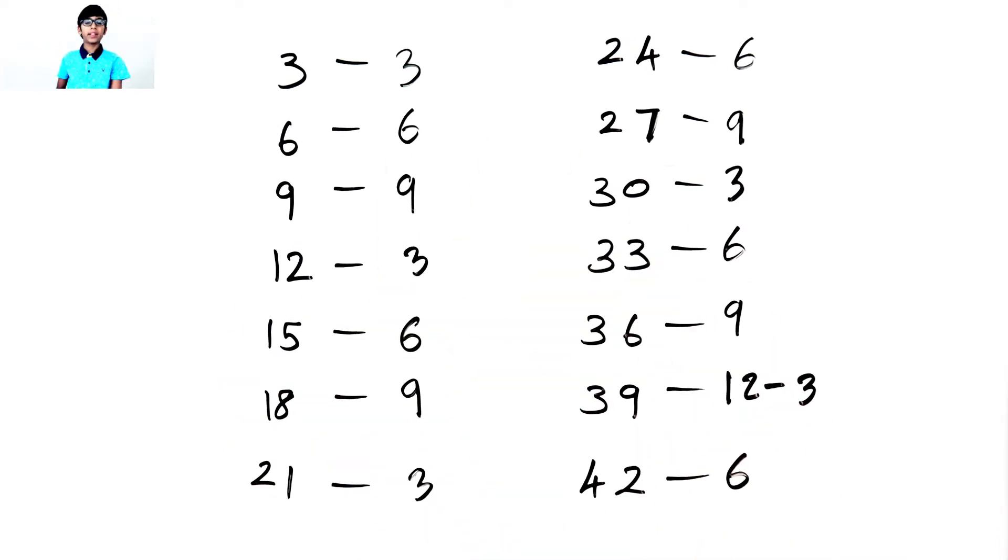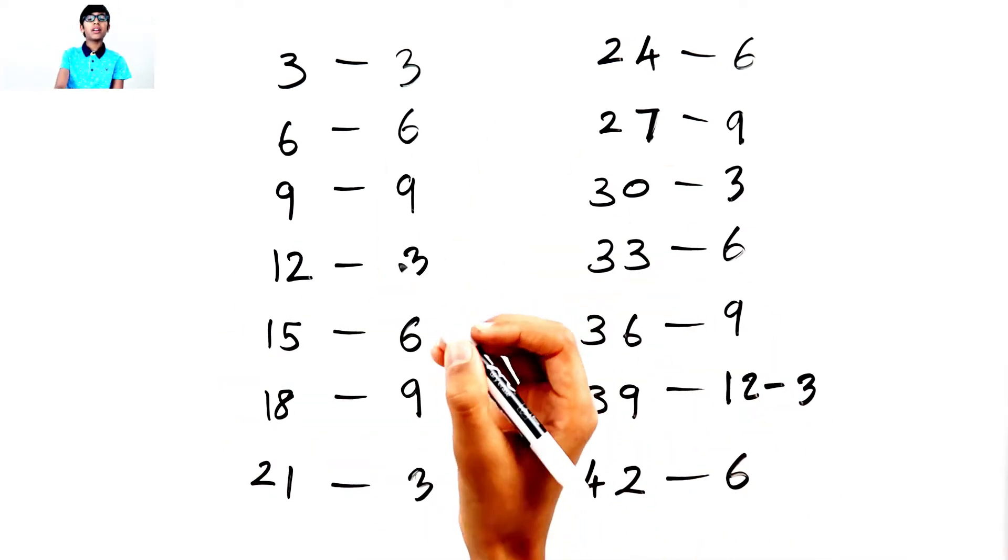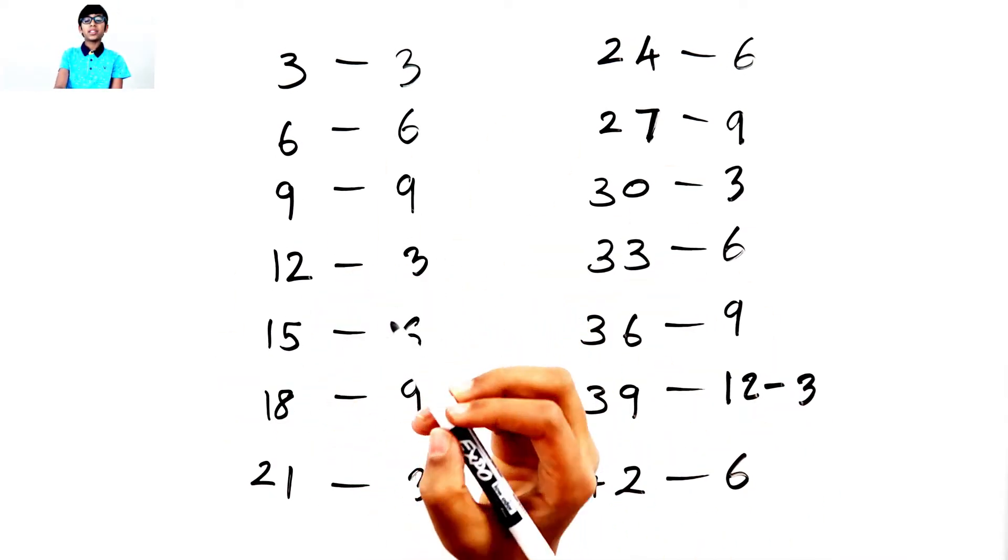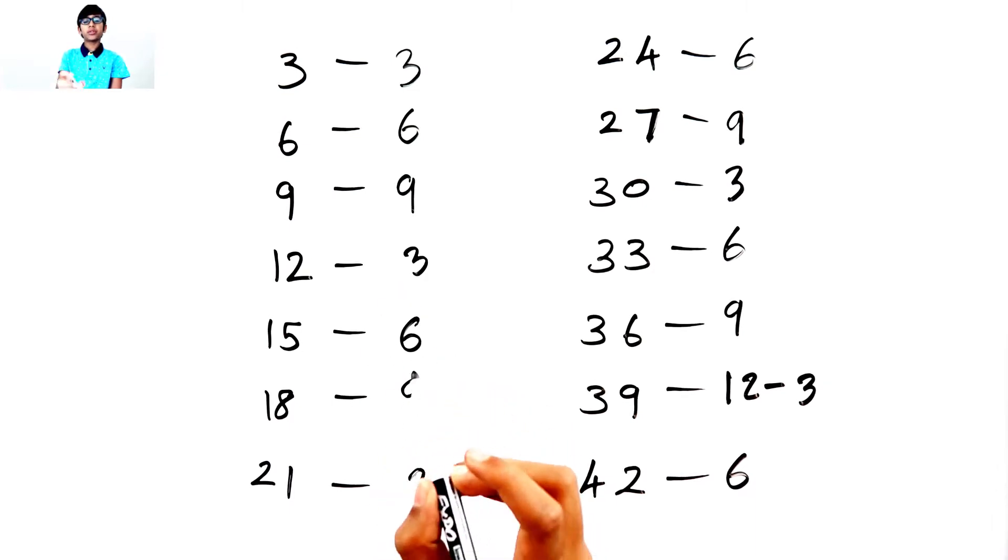Look at this! If I add the digits of these numbers, they equal 3 or 6 or 9. That means if I add the digits of a number and it equals 3 or 6 or 9, that whole number can be divided by 3.